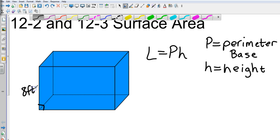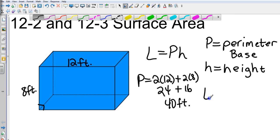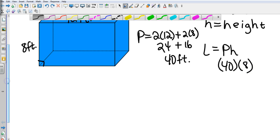and let's say the length of this one is going to be 12. So to find my lateral area, it's going to be the perimeter of one of the bases. So perimeter is going to be 2 times 12 plus 2 times 8. So that's going to be 24 plus 16 for a total of 40 feet. And then our height is 8. So that's going to be 40 times 8, which is going to be 320 feet squared.